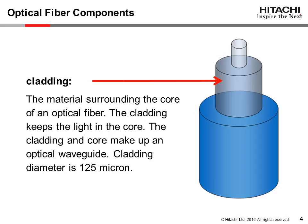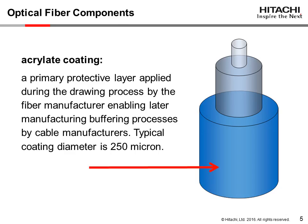The second component is cladding, the material surrounding the central core. Its primary function is to keep the light transmitting through the fiber's central region through internal reflection. The core and the cladding materials are manufactured together in the same glass drawing process and together comprise what is called an optical waveguide. Standard industry cladding has an outer diameter of 125 micron. The third component is an acrylate plastic coating, the primary protective layer covering the optical fiber and applied during the fiber drawing process. The coating enables normal shipping and handling in the later manufacturing buffering process by cable manufacturers. Standard industry coating has an outer diameter of 250 micron.